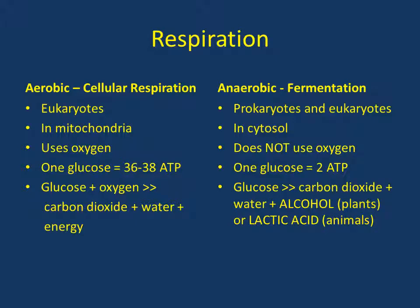Hi guys, so you're all pros now at cellular respiration. Cellular respiration is what happens in the mitochondria and it's how organisms make energy from their food, from sugars. But remember that cellular respiration happens in the mitochondria and it uses oxygen. Not all organisms have mitochondria and not always is oxygen present. So there's another kind of respiration called anaerobic respiration or fermentation that some organisms use. We're just going to talk about some of the differences and similarities between the two of these for a couple minutes.